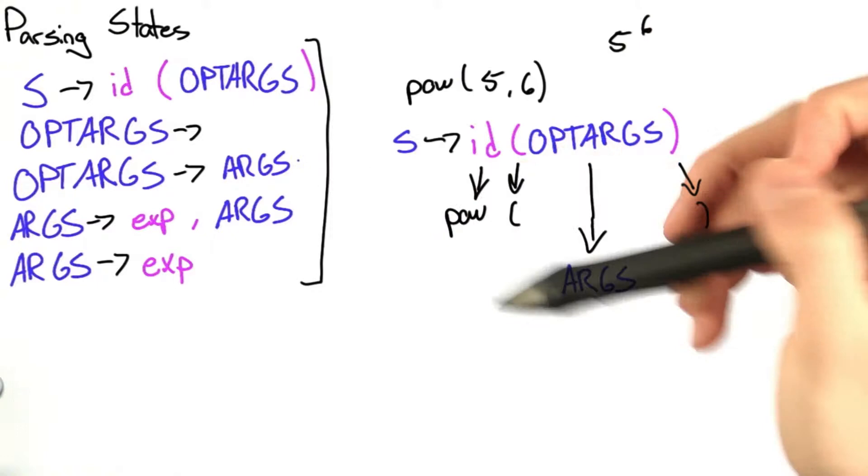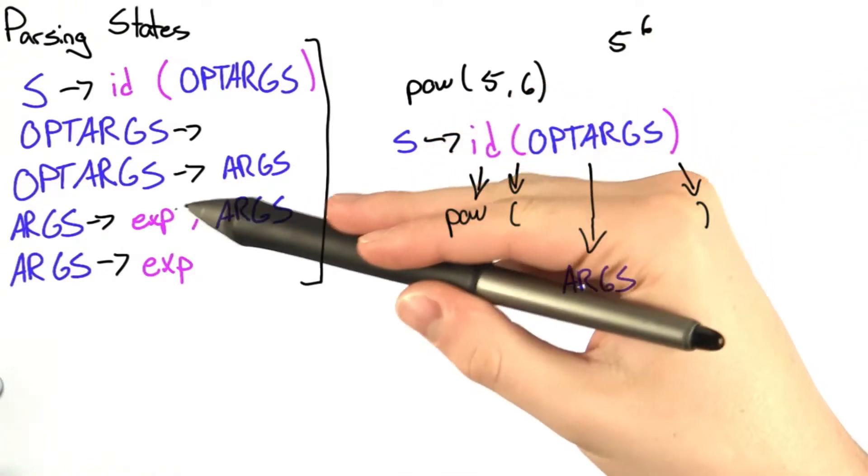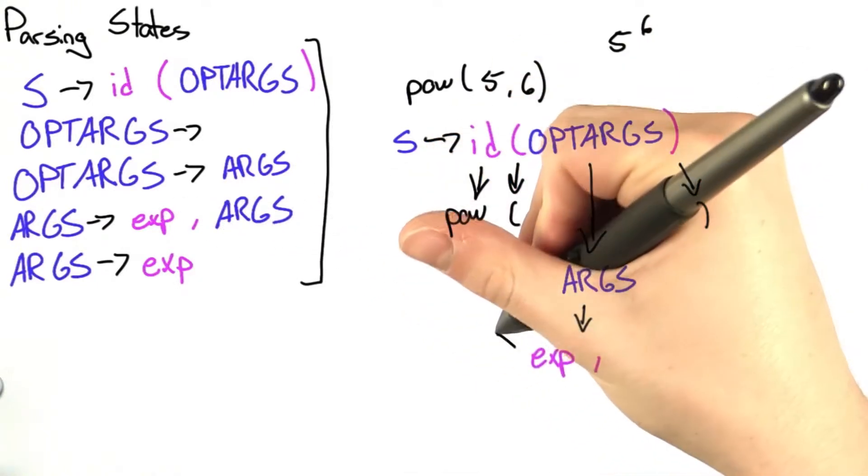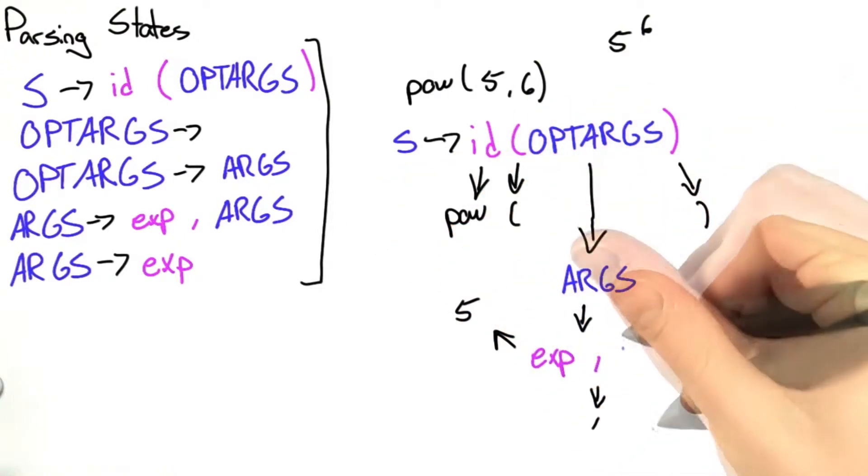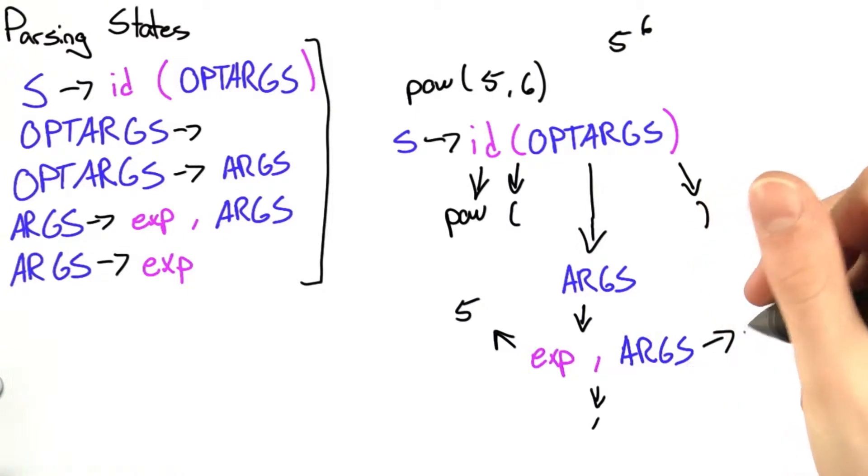The optional arguments goes to arguments. It's not empty, so it's going to go to this rule. From arguments, we're going to go to this rule, where expression is going to be 5. We have the comma that matches our comma. The rest of the rule is going to be args, which since this is our last argument, is just going to go straight to expression.